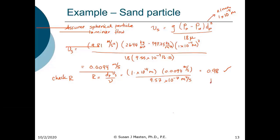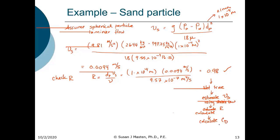If the Reynolds number check had failed, you would use an iterative process: first estimate terminal settling velocity using Stokes law, then calculate Reynolds number, then calculate the coefficient of drag using the full equation, then calculate a new terminal settling velocity, and continue until it converges. We will actually have to do this when we move into filtration hydraulics.